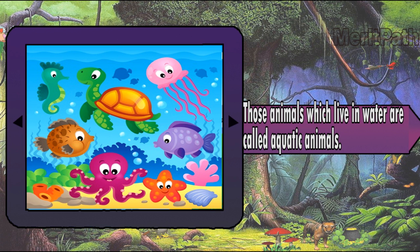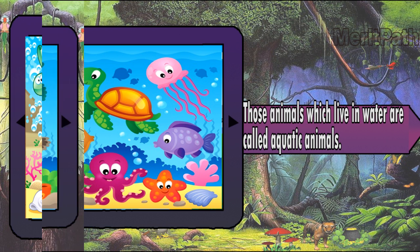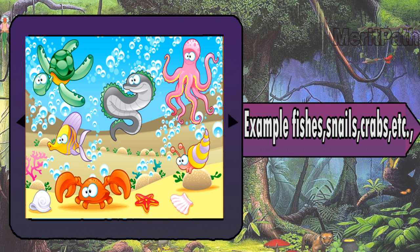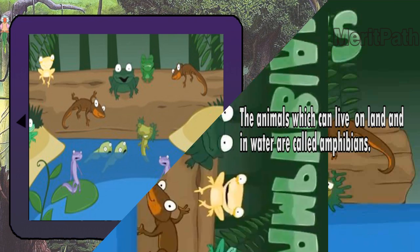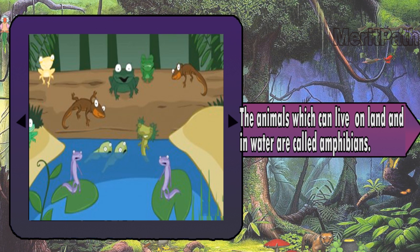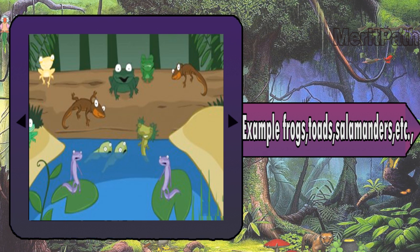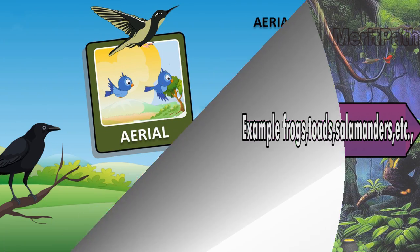Those animals which live in water are called aquatic animals. Examples: fish, snails, crabs, etc. The animals which can live both on land and in water are called amphibians. Examples: frogs, toads, salamanders, etc.